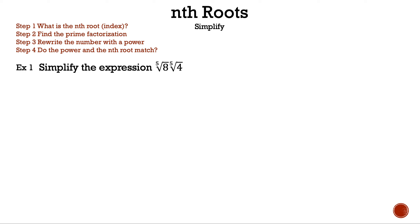Now let's read the question. Simplify the expression: the fifth root of eight times the fifth root of four. First, let's write down the fifth root of eight times the fifth root of four. We could multiply the eight and the four since they have the same index, but since we're simplifying, we want to keep the numbers small.